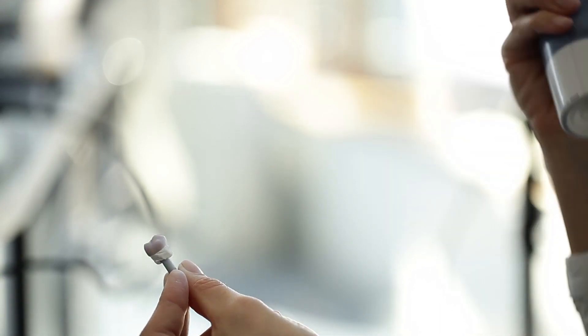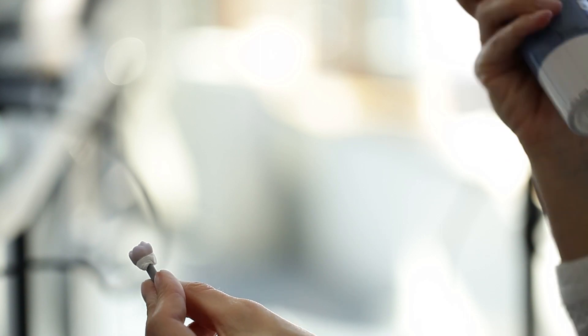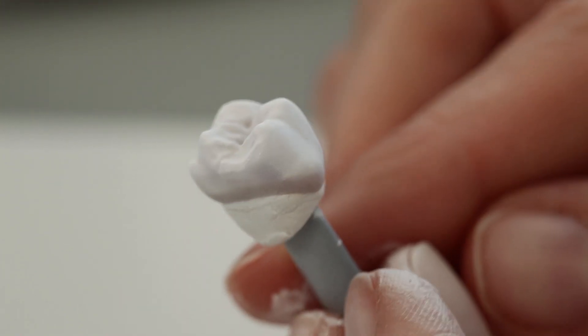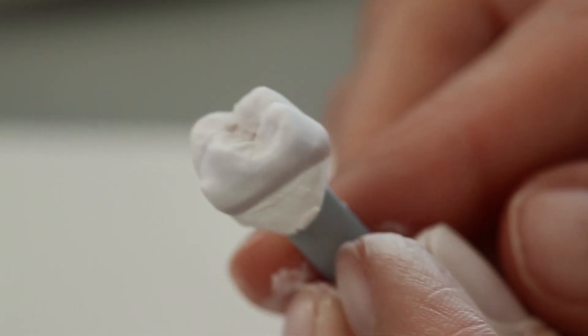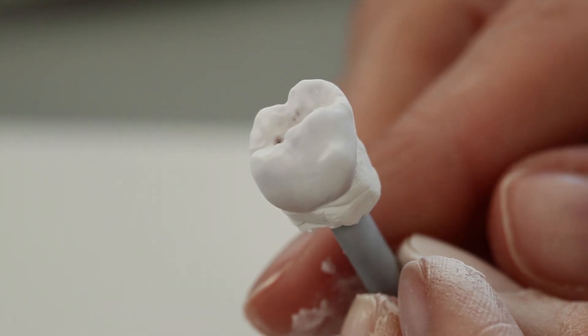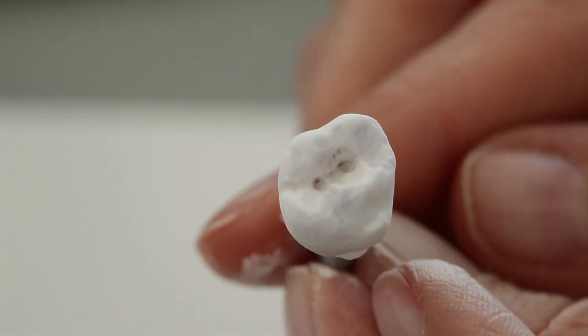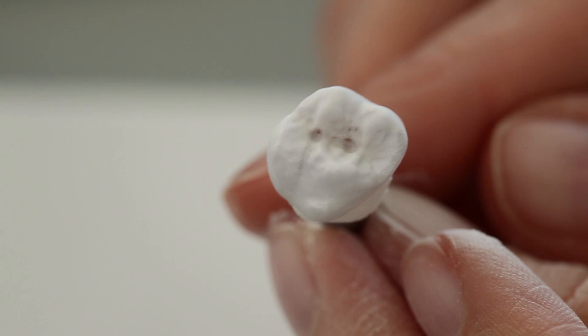Rotate the restoration to achieve an even layer. Shake the spray can between individual bursts. Allow the glaze to dry briefly until a whitish coating is visible. If the glaze layer looks irregular, spray the restoration again.